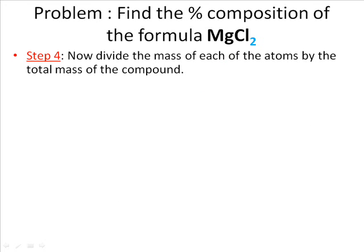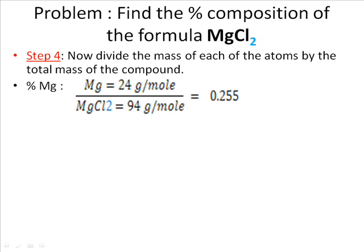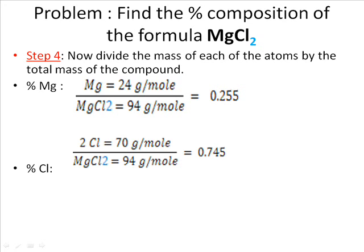Step 4. Now divide the mass of each of the atoms by the total mass of the compound. For your percentage for Magnesium, you're going to divide 24 grams per mole by 94 grams per mole, and you get 0.255. For your percentage for Chlorine, you're going to divide 70 grams per mole, divided by 94 grams per mole, and you get 0.745.